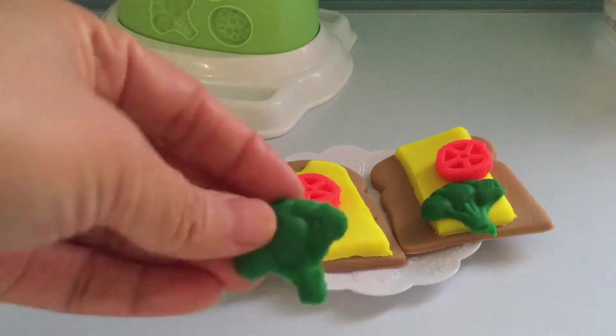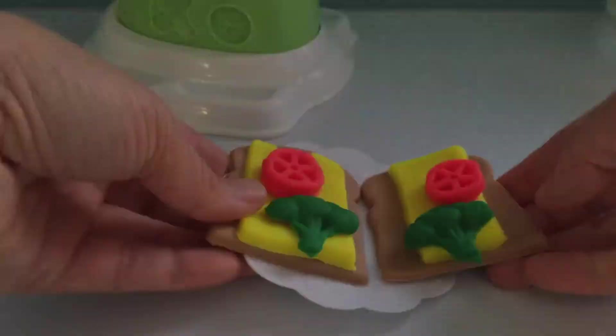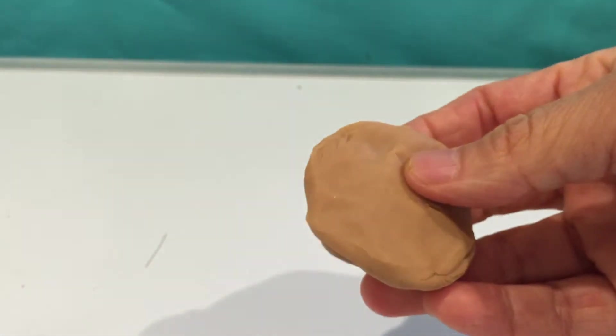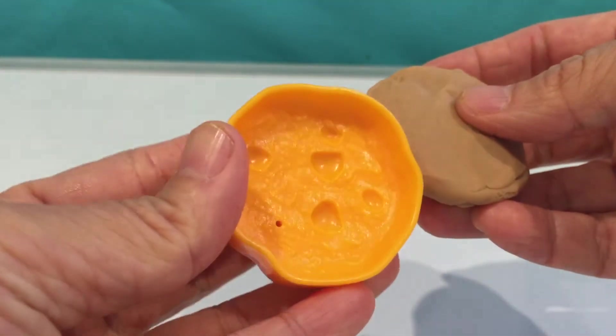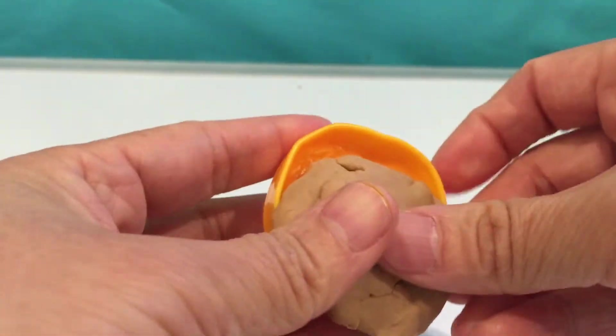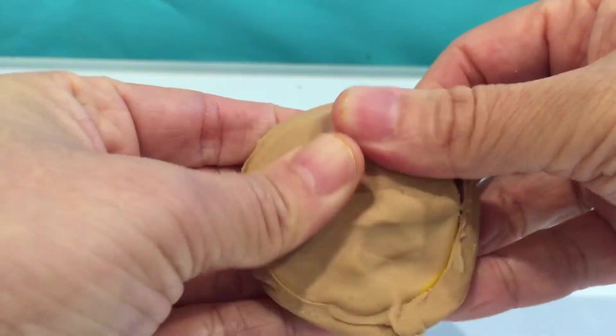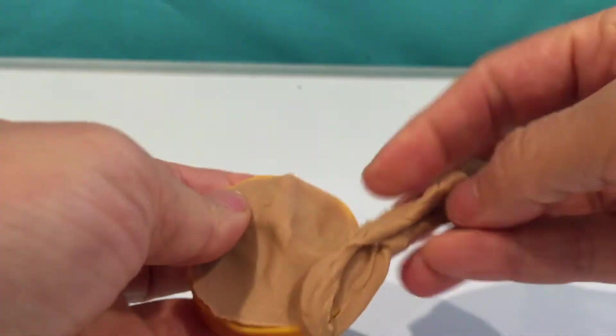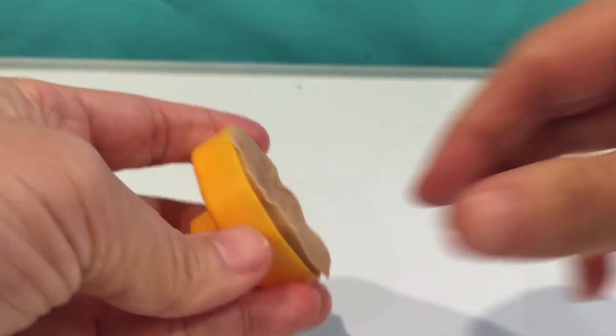This is our sandwich. Looks delicious. Now I'm going to make some biscuits with different flavors. With the brown Play-Doh, we're going to make one piece of chocolate biscuit with the cream candy on it.